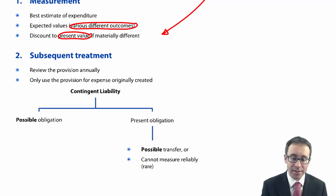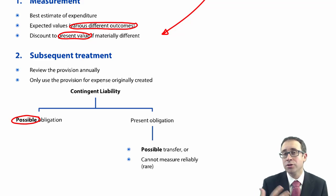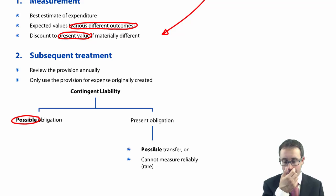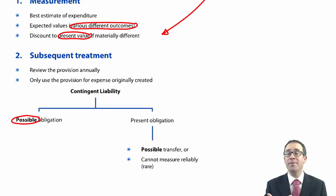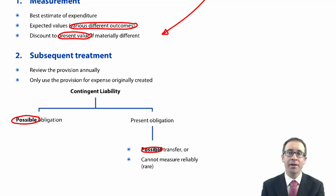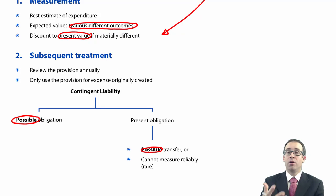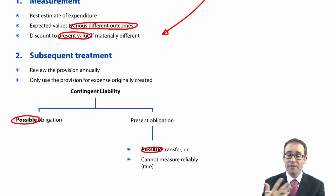In terms of contingent liabilities: we have a contingent liability if there is a possible obligation — so you're not sure if you've done anything wrong — or maybe you have done something wrong but there is only a possible transfer. Whenever we're talking about 'possible', we're talking about less than a 50% chance of it actually happening. Alternatively, maybe you cannot measure the outflow reliably, though that's very rare — if you have a probable outflow, you generally know it's going to happen and know how much it will be.